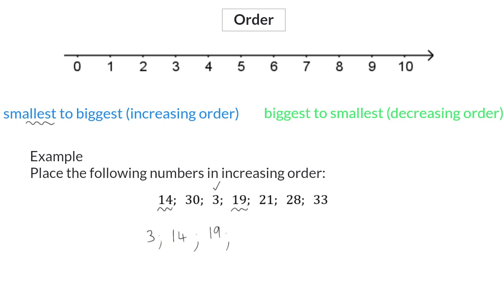In the 20s, we have 21 and 28, which is already in increasing order. Now we're left with 30 and 33. So once we've added the 30 and the 33, the numbers are in increasing order.